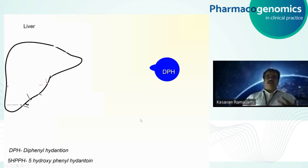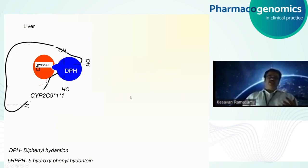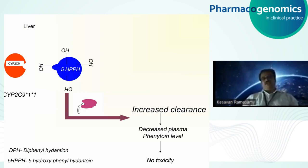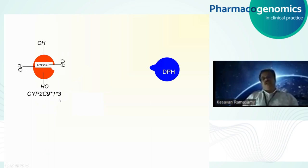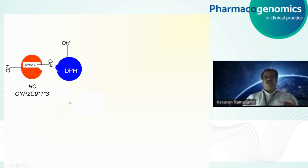Let's look at the mechanism. DPH — diphenylhydantoin, or phenytoin — comes to the liver for metabolism, where CYP2C9 enzymes hydroxylate phenytoin and convert it into 5-hydroxyphenyl phenytoin, an inactive water-soluble metabolite easily excreted by the kidney. The parent drug does not accumulate, so patients with star 1 / star 1 do not develop toxicity. However, those carrying the heterozygous genotype have impaired binding to the enzyme due to a missense mutation, resulting in partial hydroxylation and slightly decreased clearance.